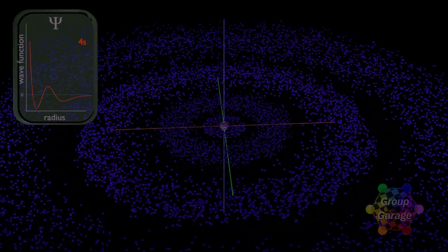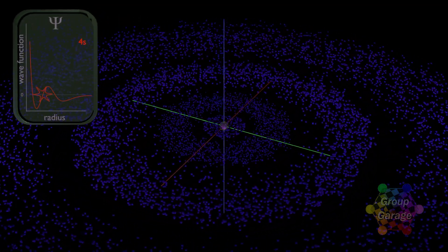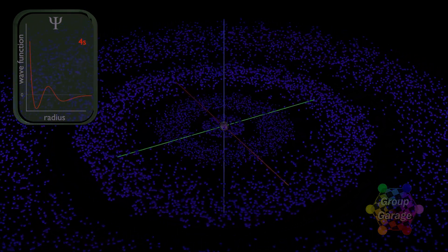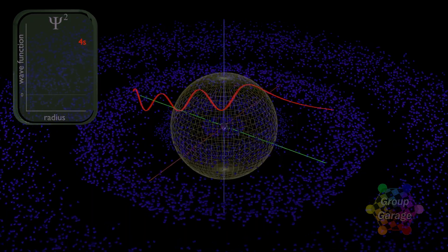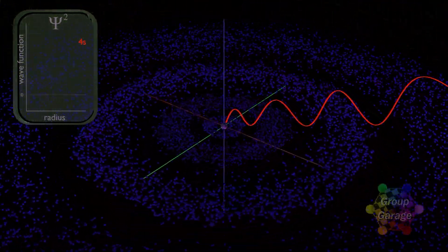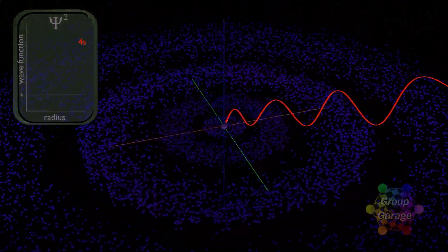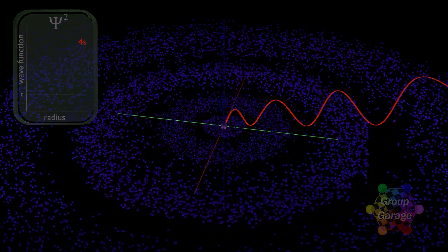Here is the 4s wave function, with three spots where the function is zero. Squaring the wave function will give us four peaks, and then multiplying by the volume, we see the radial probability for the 4s electron will have the four regions and, that's right, three nodes.